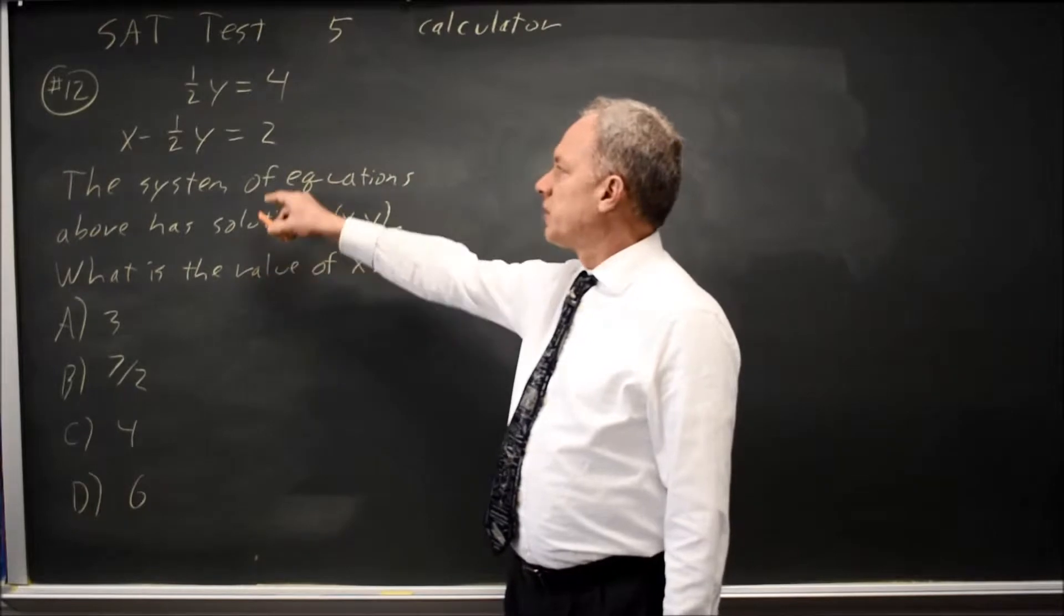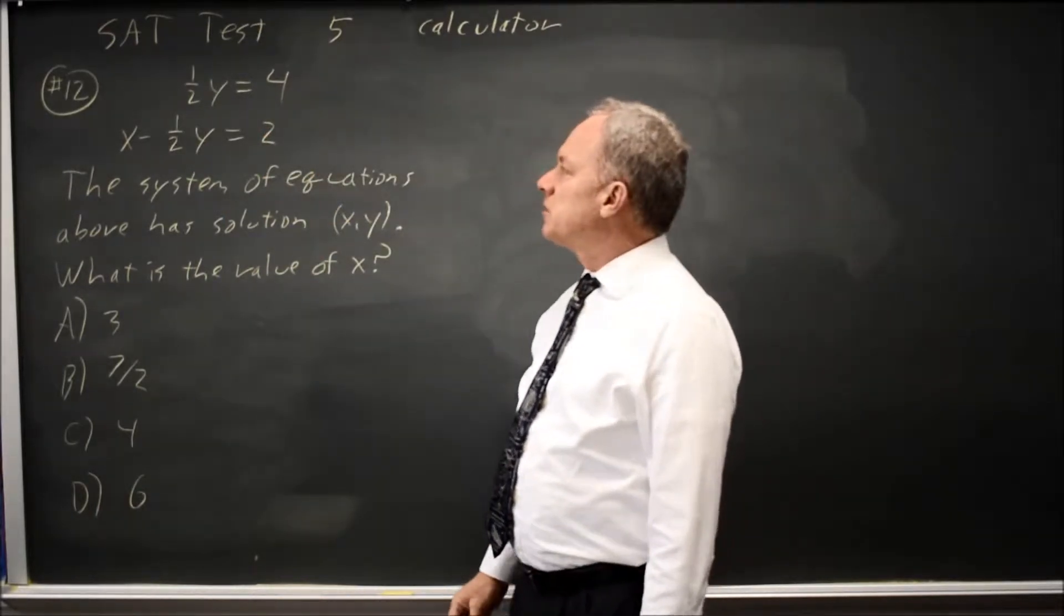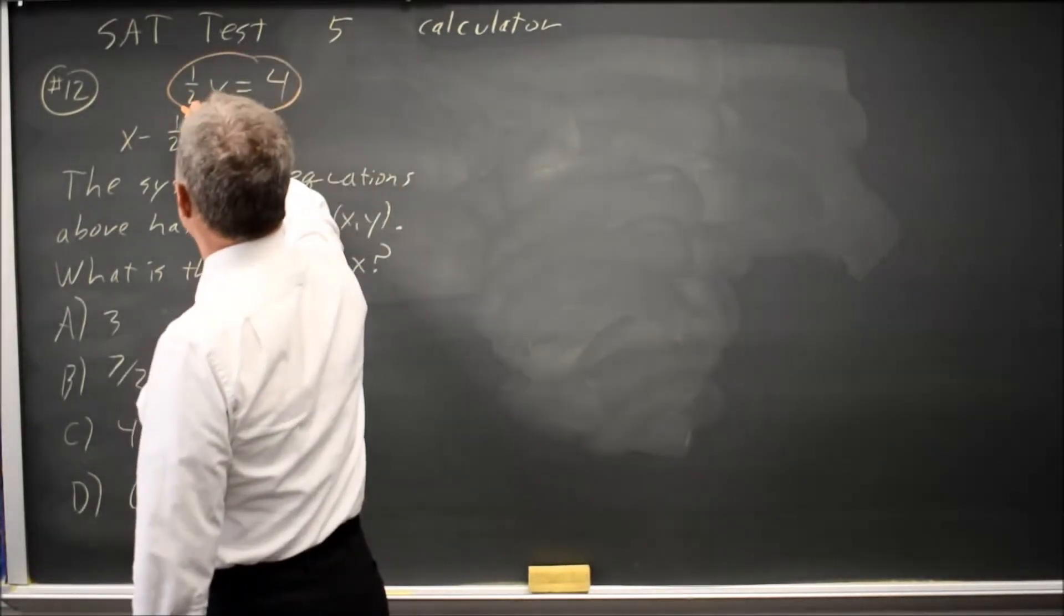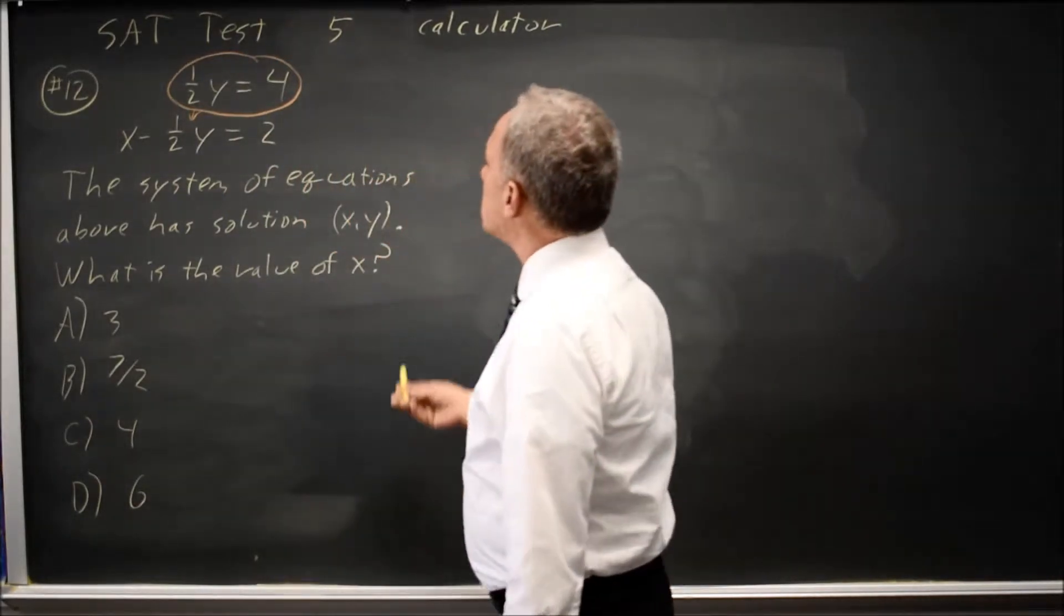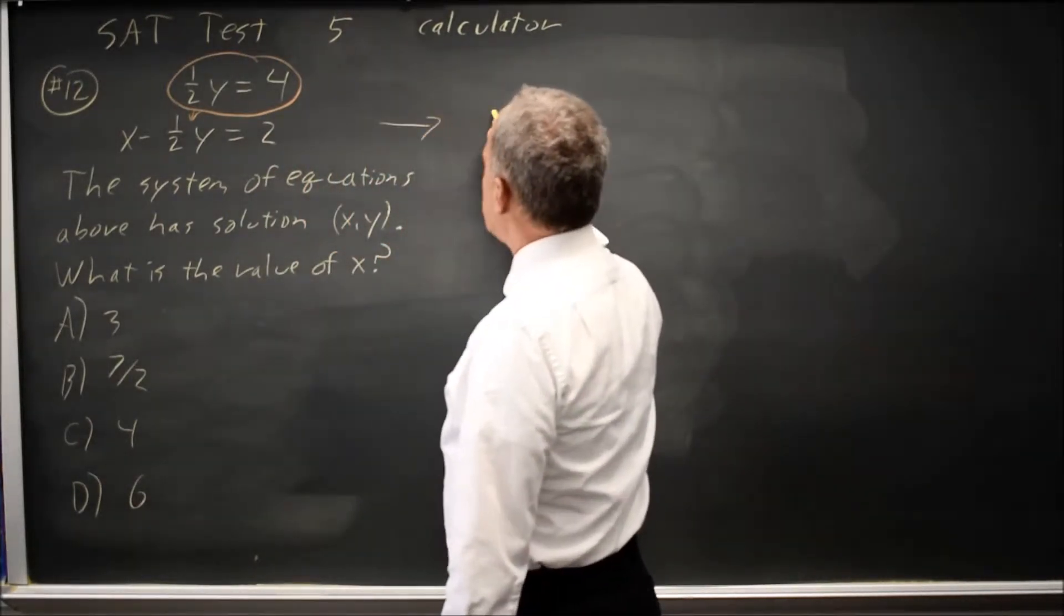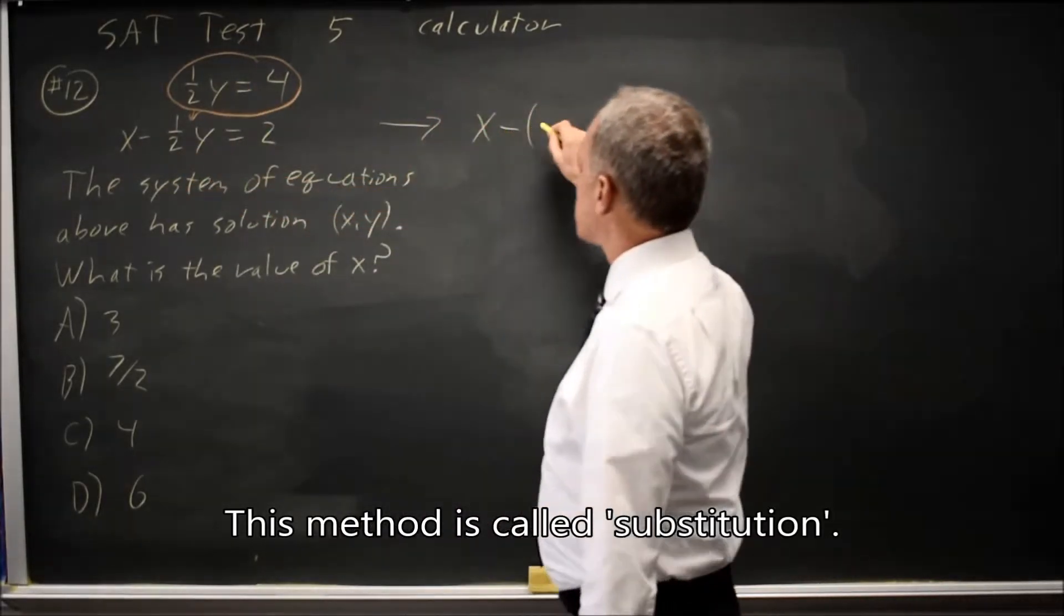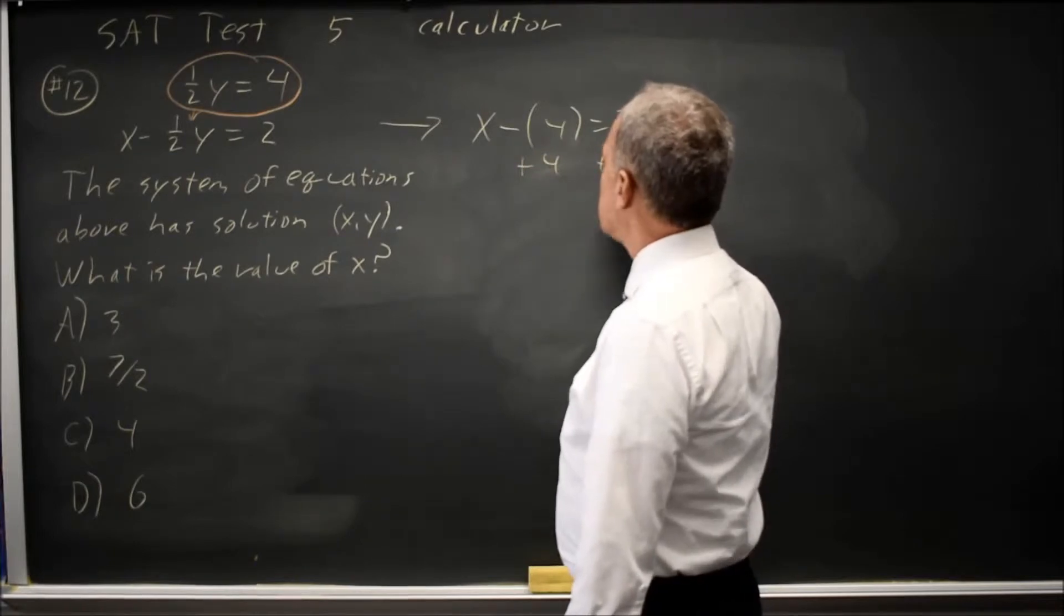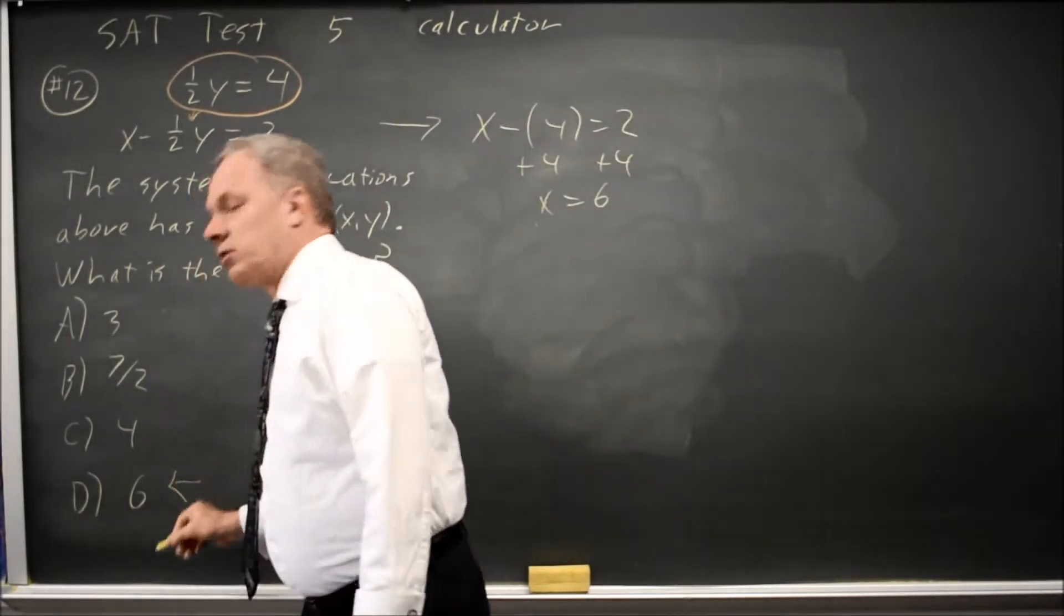The solution means that these x and y values work for the first equation and the second equation. There are several ways of solving this. The easiest is probably to notice that this expression, 1 half y, appears in the second equation, so I can substitute it in and get x minus, since 1 half y equals 4, that's x minus 4 equals 2. Add 4 to both sides, I get x equals 6. That's what College Board was asking for. I'm done.